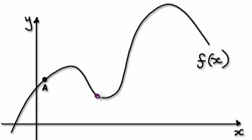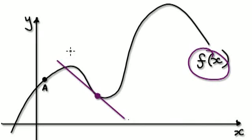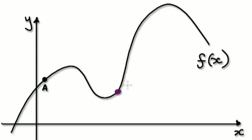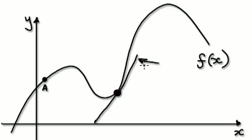Suppose you want to find out the gradient of this function at this point here. What you would do is draw a straight tangent line that just touches this point. Then the gradient at this point is really you finding out the gradient of this tangent line. It's got to be a straight line, so I'm going to try my best to draw a straight line — that's a good one.